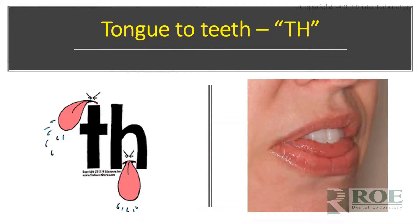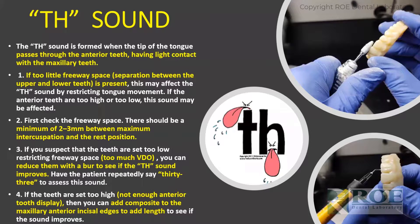The 'th' sound involves tongue to teeth — sounds we make every day unconsciously. It's formed when the tip of the tongue passes through the anterior teeth with light contact with the maxillary teeth. This pertains to vertical dimension and freeway space, which are intertwined. If there is not enough freeway space, the 'th' sound is restricted because the tongue doesn't have room to move, meaning the anterior teeth are too high or too low, or the vertical dimension is open too much.